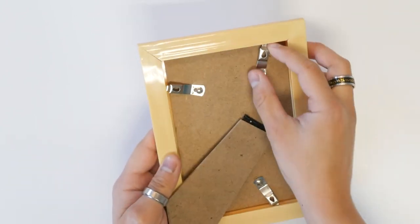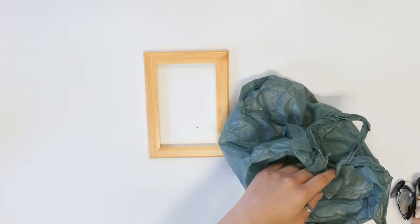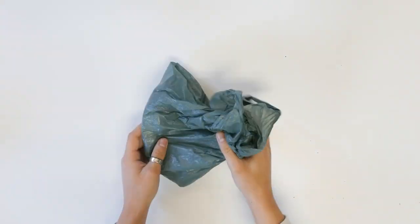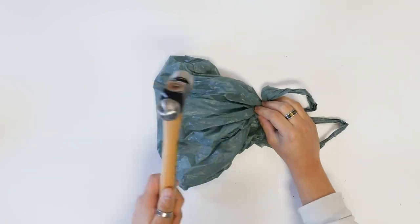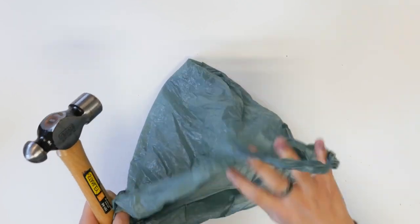Next, take your shells and place them in a plastic bag. Use a hammer or something heavy to break the shells into smaller pieces. Be careful here because broken shells can be sharp.